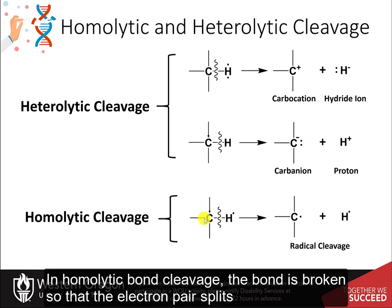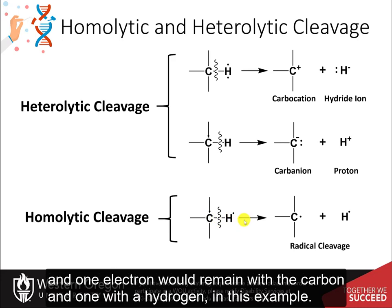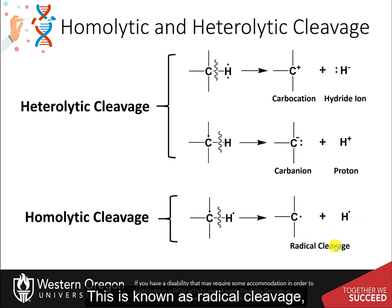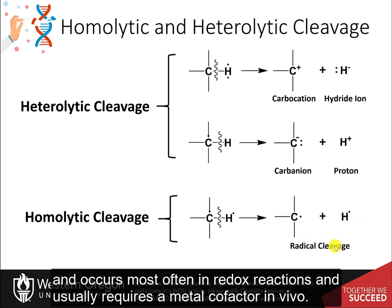In homolytic bond cleavage, the bond is broken so that the electron pair splits and one electron remains with the carbon and one with the hydrogen. This is known as radical cleavage and occurs most often in redox reactions, and usually requires a metal cofactor in vivo.